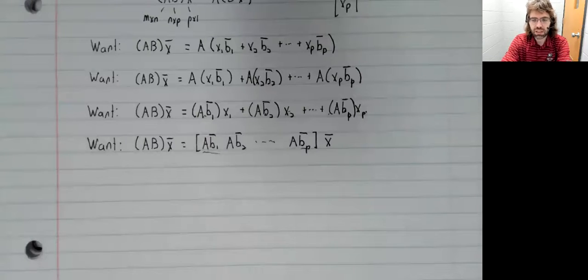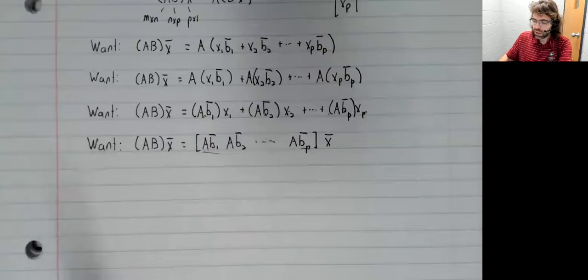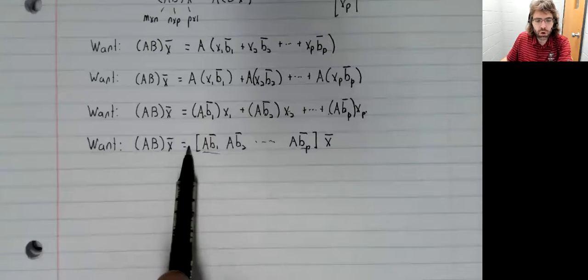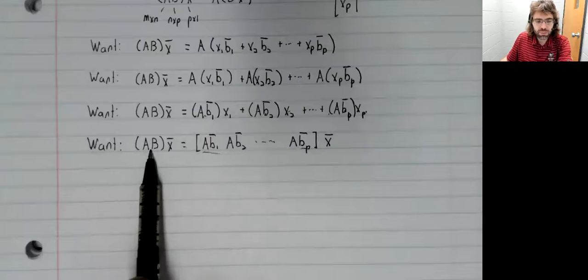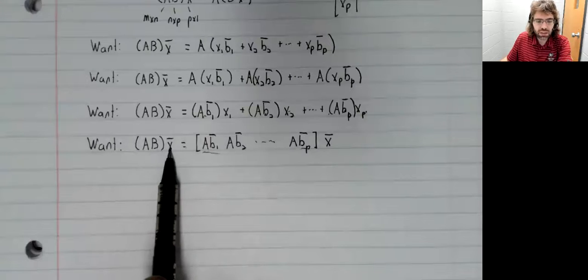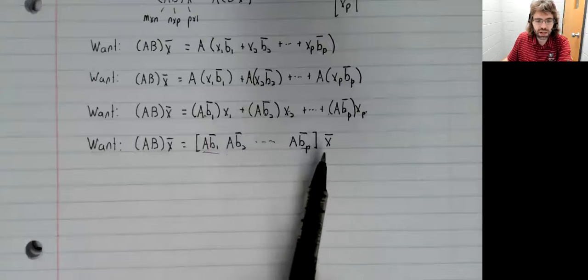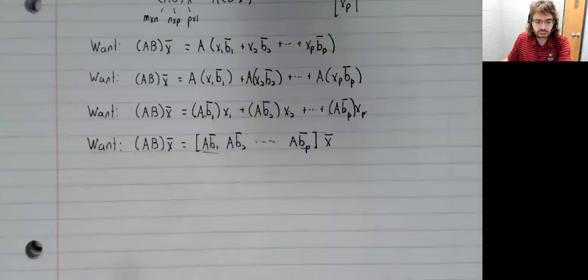So if multiplication is going to be associative, which we badly want it to be, this equality has to be true.